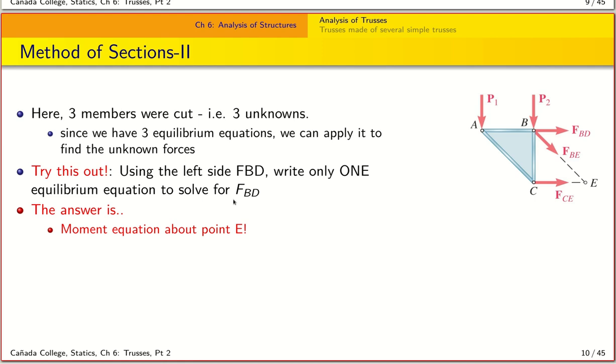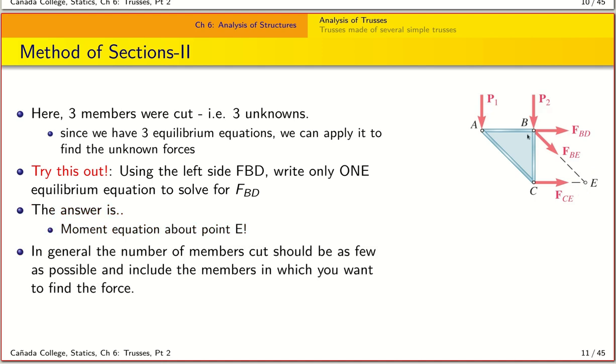The answer is yes, and it's the moment about point E because FBE and FCE both point into E, so the moment about E for these unknowns is zero. The only unknown now will be our force FBD acting about point E, given that we know the loads P1 and P2 and the dimensions involved in our calculation. In general, when you do a sectioning you want to cut as few members as possible.